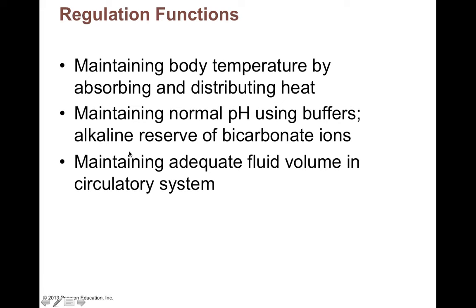Blood also helps regulate blood pH, which sounds weird — how can blood regulate its own pH? Well, there are chemicals in blood that act as chemical buffers, like bicarbonate ion from carbonic acid, and protein buffers like albumin. Blood also maintains adequate fluid volume. Because 55% of blood is plasma, which is mostly water, there are things in blood that attract and hold onto water — like albumin — keeping it in the blood rather than losing it to tissues.